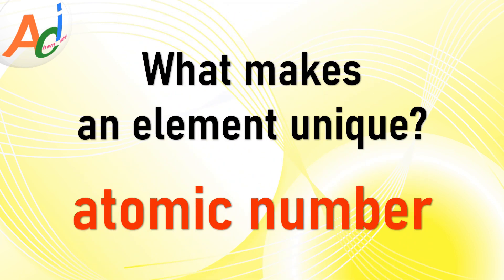You should keep in mind that the atomic number is what makes an element unique. Different elements have different atomic numbers. For example, the atomic number of hydrogen is 1, while the atomic number of oxygen is 8, and the atomic number of carbon is 6, and likewise.